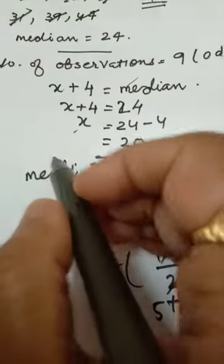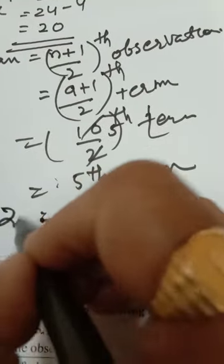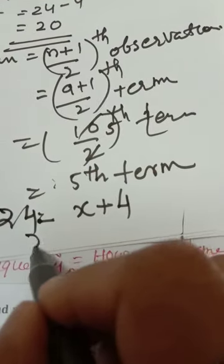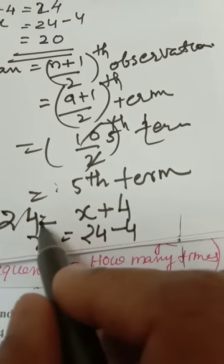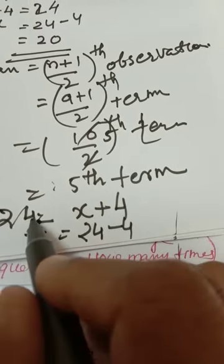Median given, what is median? 24. Calculation same only. Then x equals 24 minus 4. x you keep it here, 4 you are taking here, then plus 4 will become minus 4.